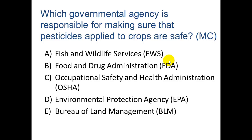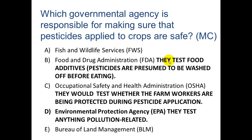Which government agency is responsible for making sure that pesticides applied to crops are safe? The correct answer is D — the Environmental Protection Agency. They test anything pollution-related. The Food and Drug Administration tests food additives — things purposely put into your mouth, like new artificial flavors — but pesticides are presumed to be washed off before eating, so they don't count. OSHA, the Occupational Safety and Health Administration, tests whether farm workers are being protected during pesticide application — they focus on the people whose occupation it is to apply them.